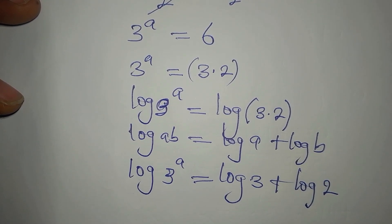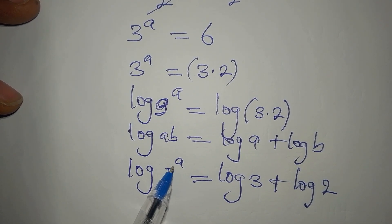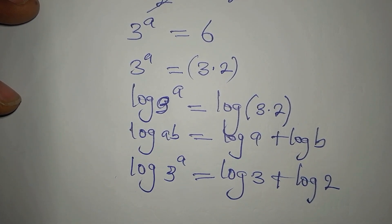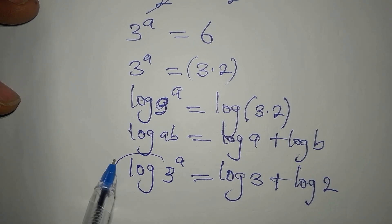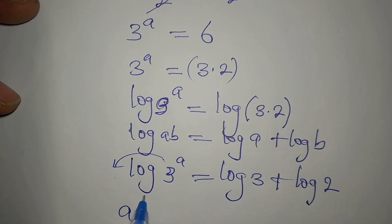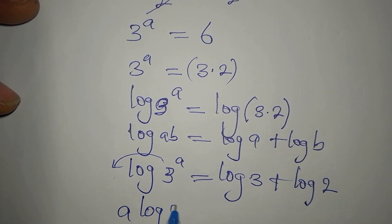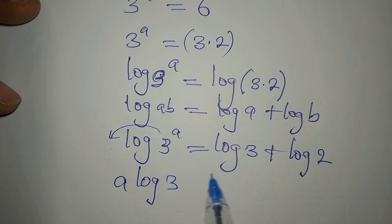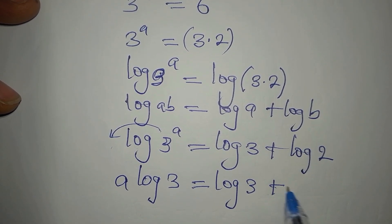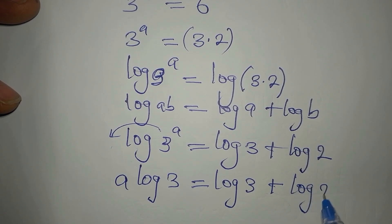And again, you cannot get your a if it remains the power. So it has to go behind according to one of the laws. Okay, this will come here to multiply the log. So we have a times log 3 equals log 3 plus log 2.